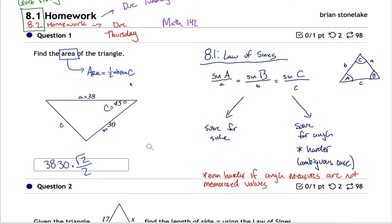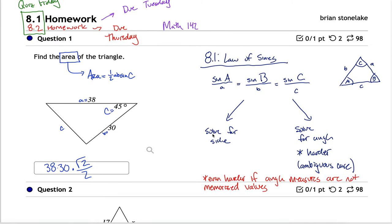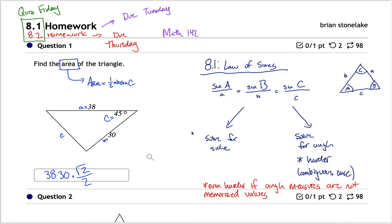I kind of started going over the homework inadvertently while still in the review portion. Before going further: the area formula problem is good to know exists, but don't expect to be tested on it. The heart of this section is using the law of sines to solve for a side length or an angle measure, and on your quiz that's exactly what I'm going to ask you to do.